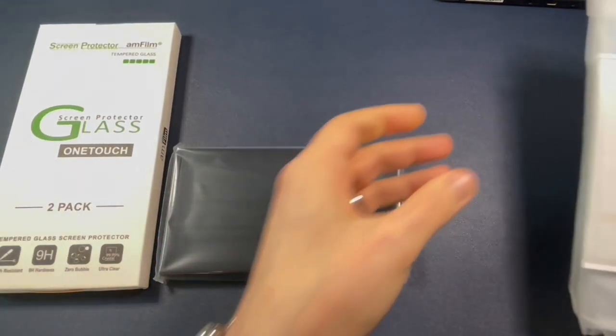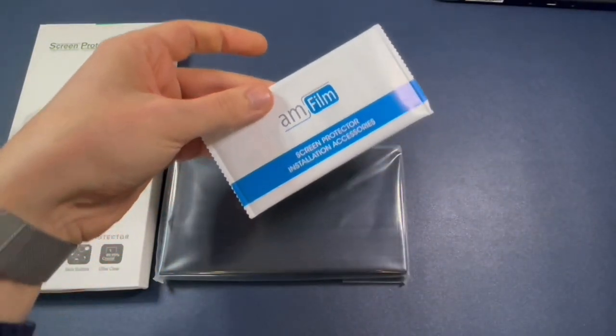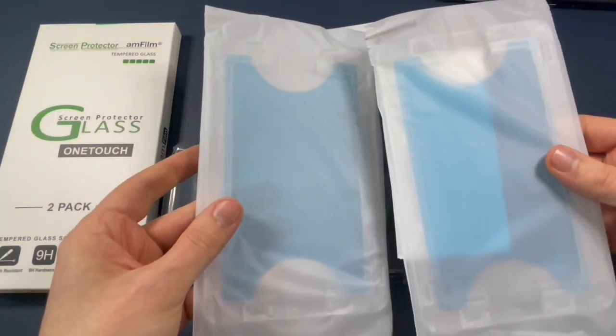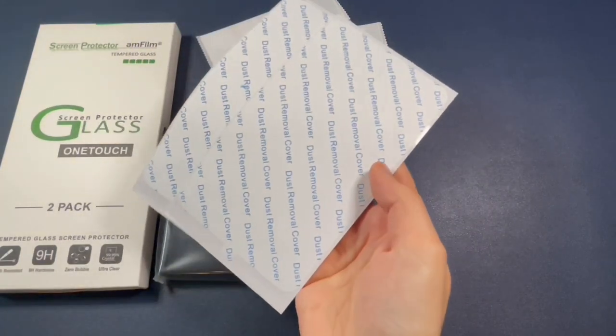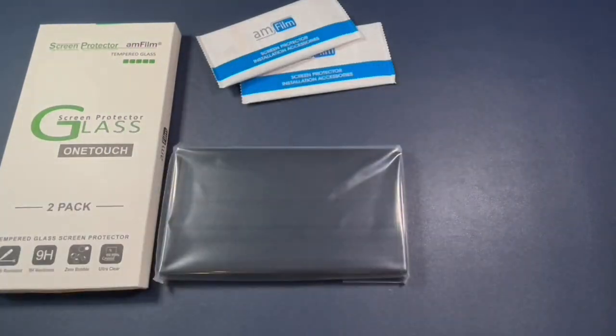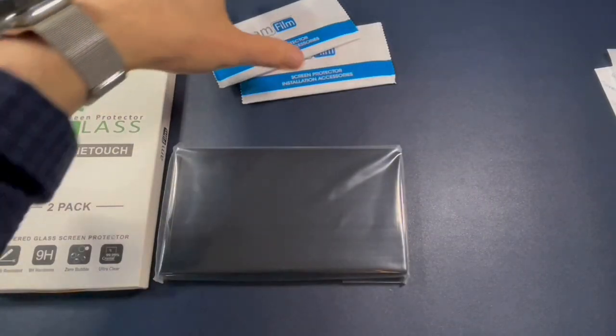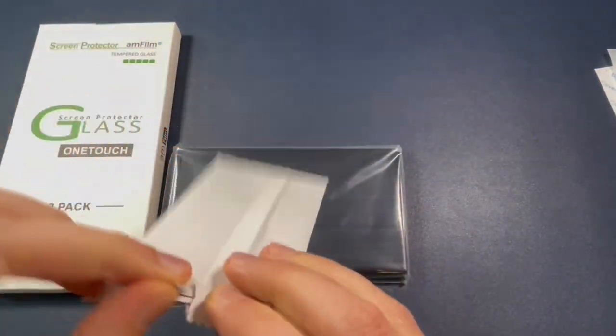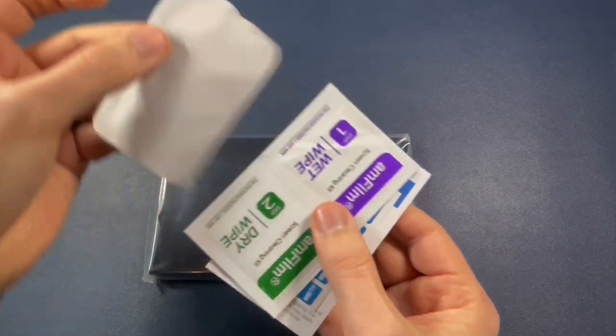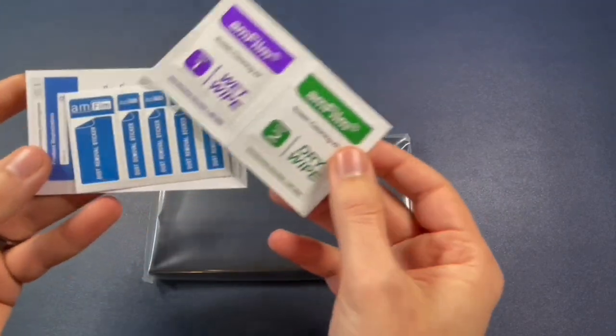In the box, you have the wet wipes and the dry wipes. The two tempered glass screen protectors with the easy installation trays. And these dust removal stickers. This is what you use right before you put on the actual screen protector. We're going to go ahead and open up one of these screen protector installation accessories packs. Inside, you've got your microfiber cloth, your wet wipe, and your dry wipe.